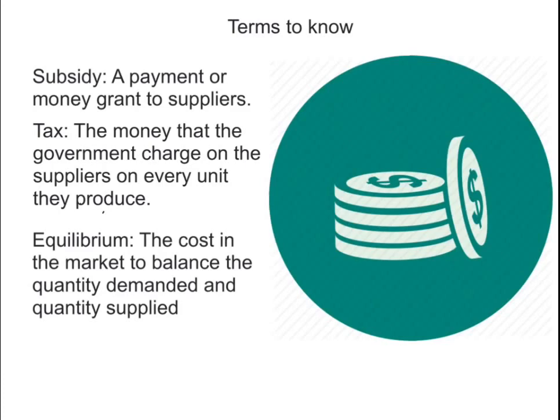Next, a tax is the money that the government charges on suppliers for every unit they produce. It is also known as an indirect tax and is added to the price of the good. Lastly, equilibrium is the point in the market that balances the quantity demanded and quantity supplied, with no excess demand or supply.